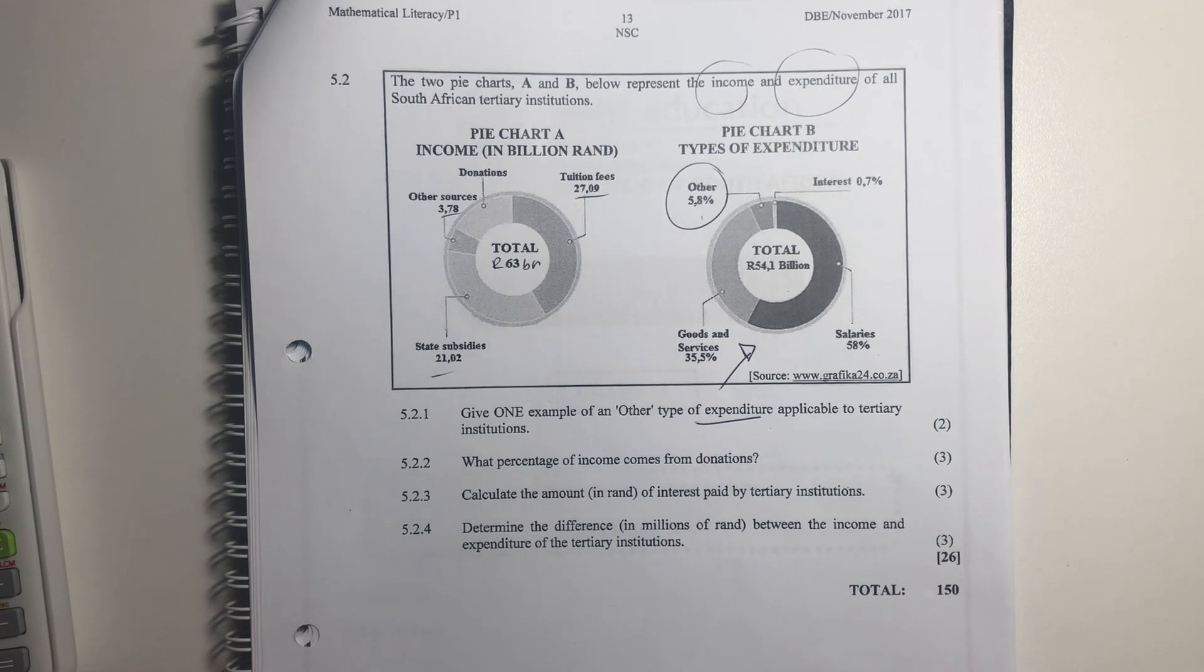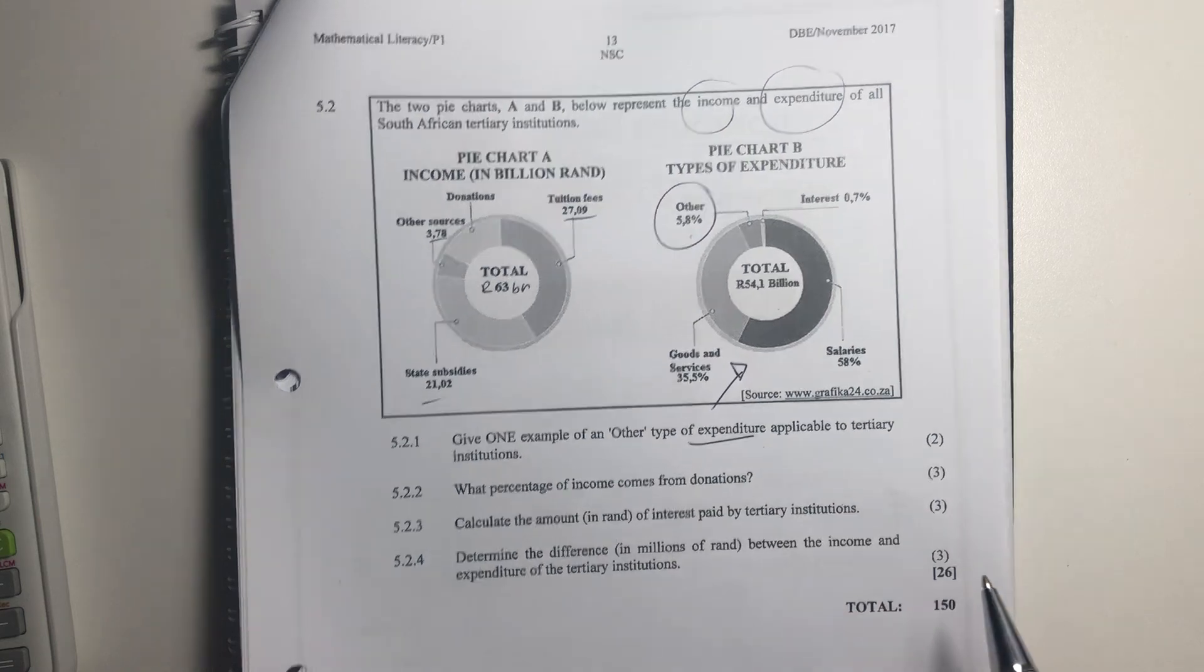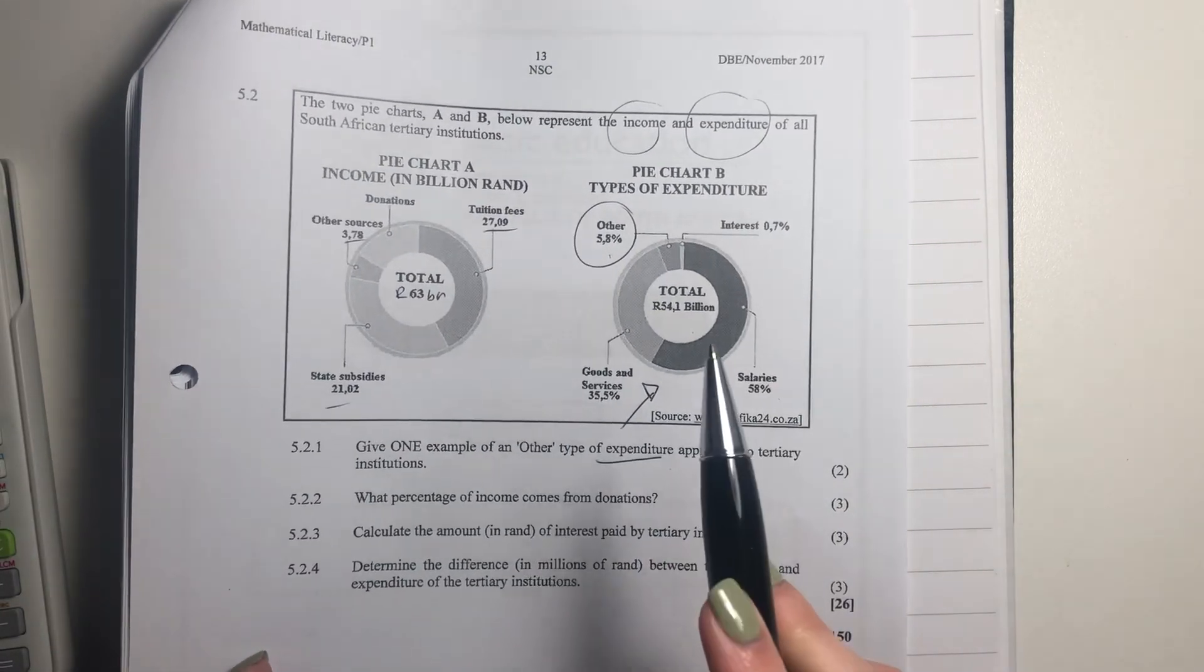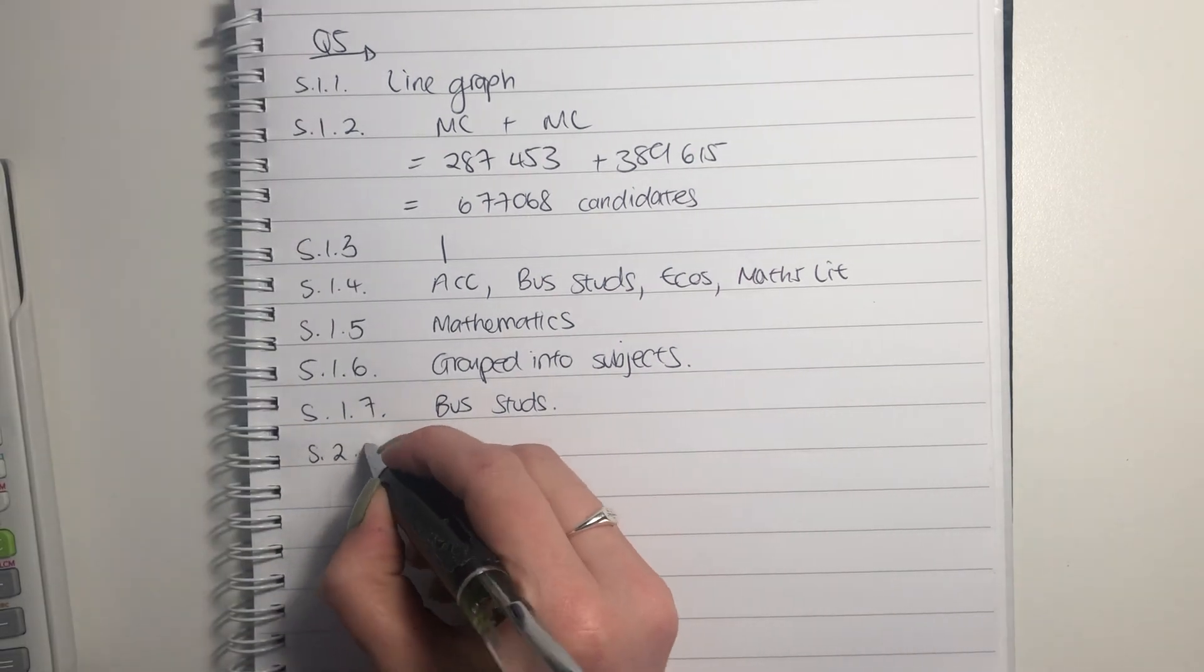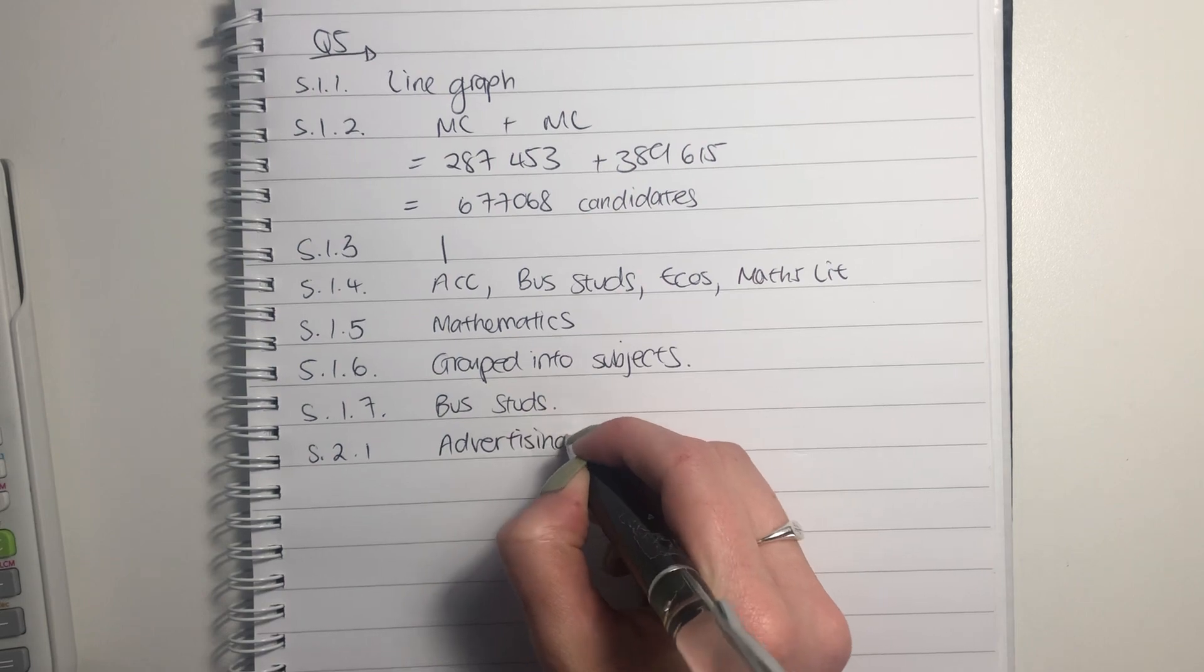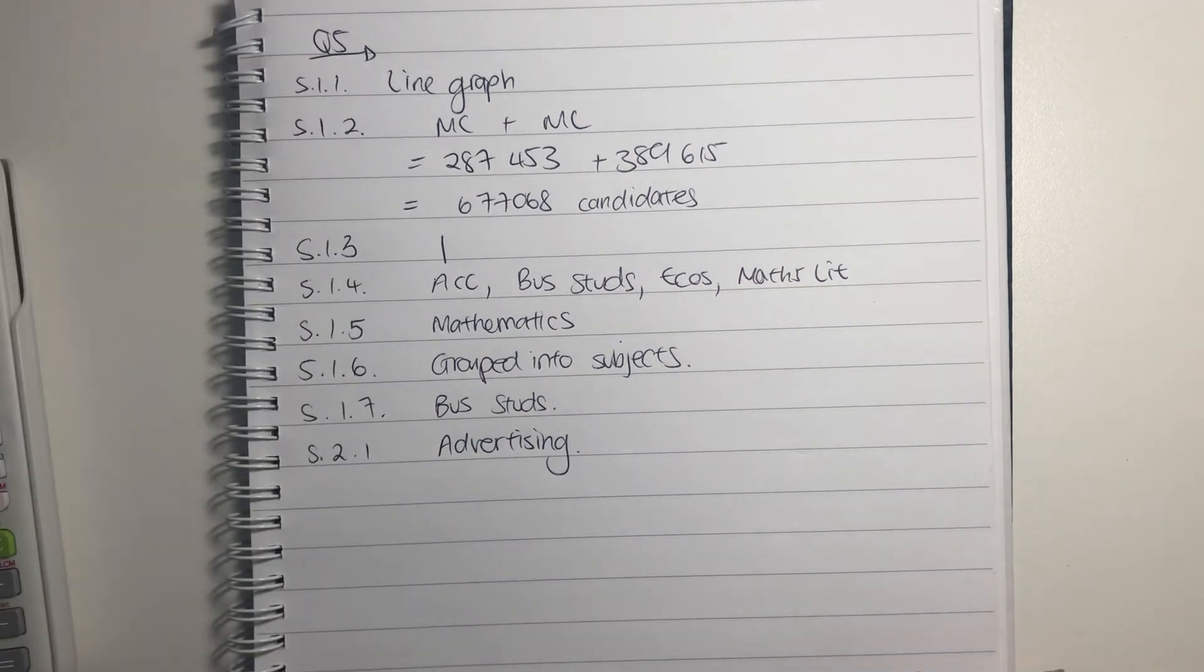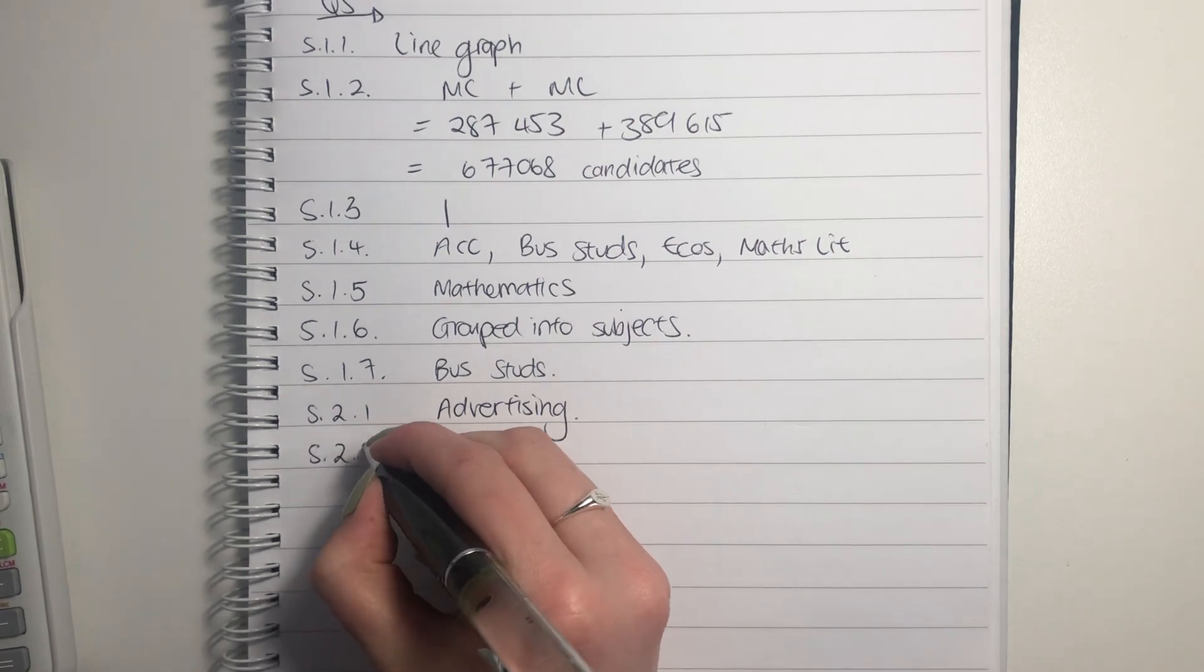You could think about advertising, copyright payments, bursaries, grants. There's lots of different things that universities pay for that are not included in the other sections. I'm just going to say advertising, because to me, that's quite an obvious one. Because we see advertising for universities all over the place. It said only one, so we don't have to keep on giving lots of examples.